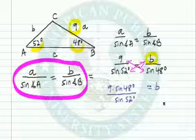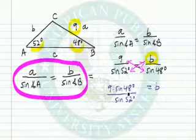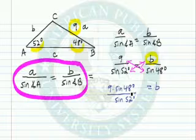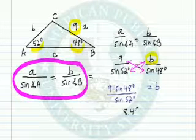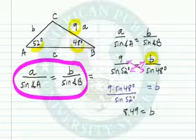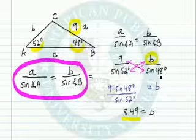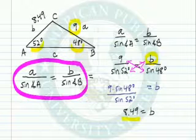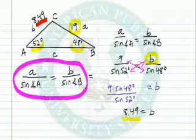I'm just going to put it in my calculator. I've got 9 times the sine of 48 degrees, then I'm going to divide by the sine of 52, and I should be getting 8.49 as a value. Now that's the side length. Now the side opposite the 52 degree angle is 9, and the 48 degree angle is less than 52 and this side is less than 9. So this is a reasonable answer.